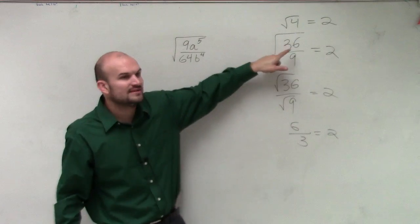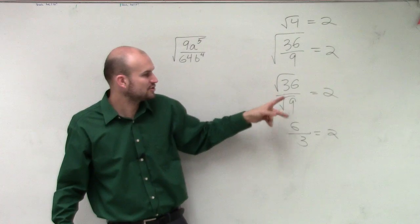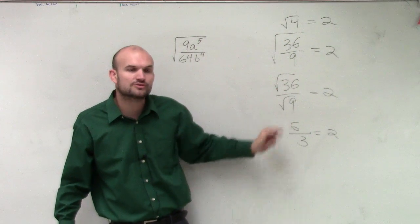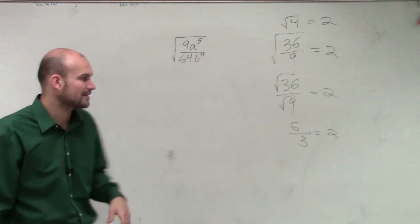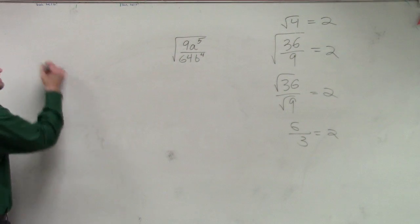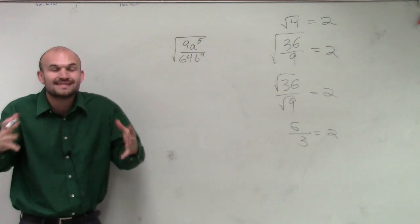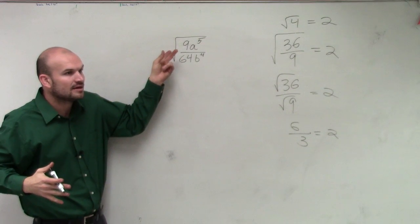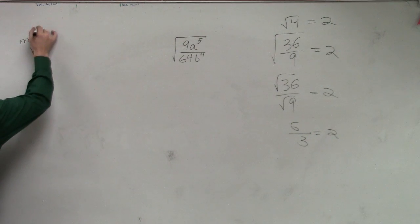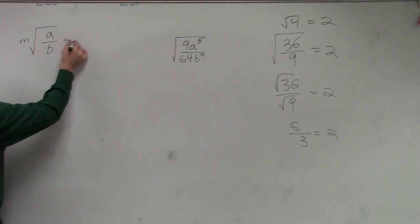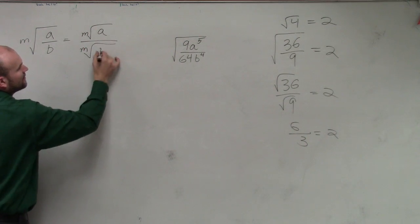So when you take the square root of a rational term, you can break that up into the square root of the numerator and the square root of the denominator. That brings us to the quotient property of radicals. It doesn't matter if I'm taking a square root, cube root, quartic root, quintic root - it doesn't matter what the root is. If I have m root of a over b, then that equals the m root of a divided by the m root of b.